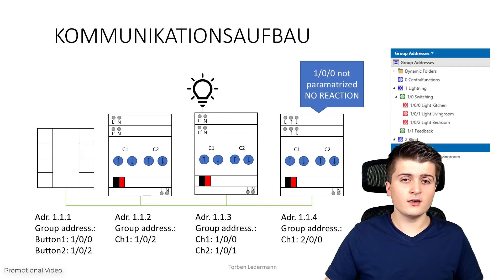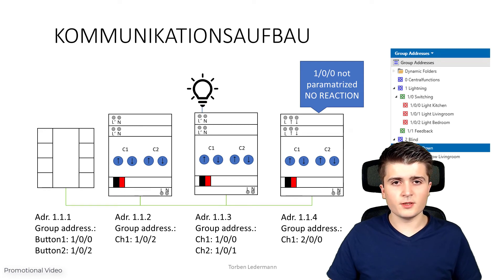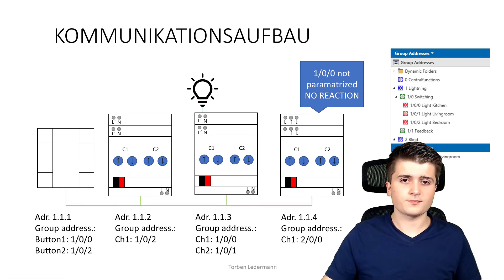The last actuator also receives the telegram but sees that it is not connected to this group address, and therefore ignores it. To summarize: with group addresses we can link multiple group objects together. It is important that these group objects have the same data type, because a switching actuator can do nothing with the information of 30 degrees Celsius — it needs the on/off information, so a one-bit data type.